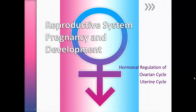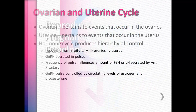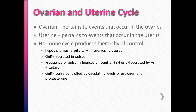In this video lecture, we're going to concentrate on the hormonal regulation of the ovarian and uterine cycle. The ovarian cycle pertains to what's going on in the ovaries, and the uterine cycle is what's going on in the uterus. They are synchronized together and the hormones are overlapping between them too.